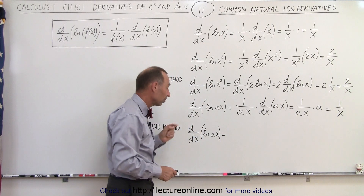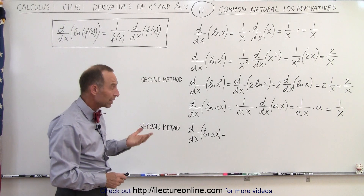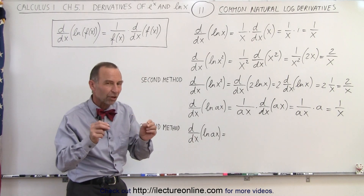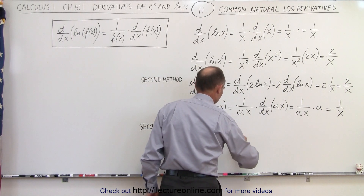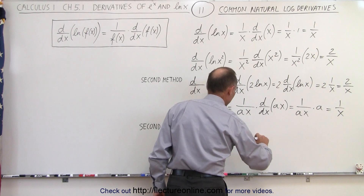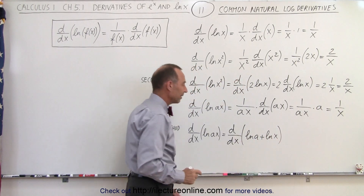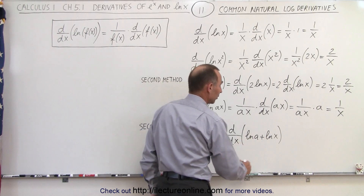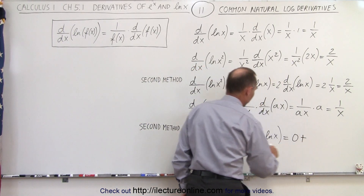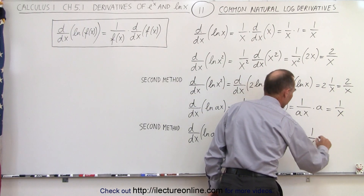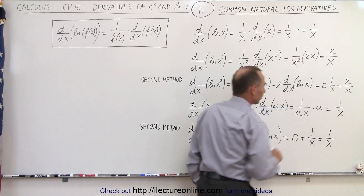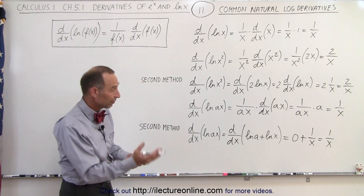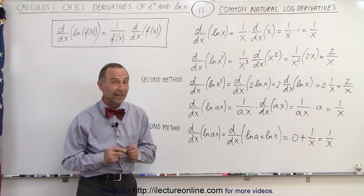We can show why that is so using a different technique. We use the logarithm rule that the natural log of a product can be written as the sum of two natural logs. So this becomes the d/dx of the natural log of a plus the natural log of x. The natural log of a is a constant, so its derivative is zero. This gives us zero plus the derivative of the natural log of x, which is 1 over x — the same result. When we break it up into the sum of two natural logs, the first one goes to zero and you get the same result.